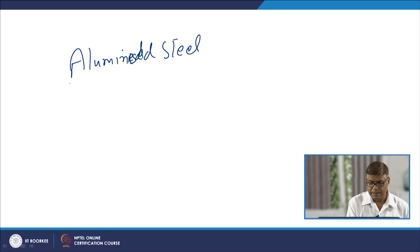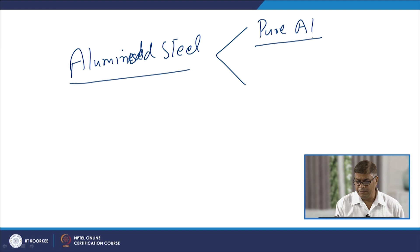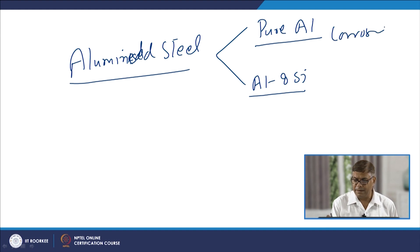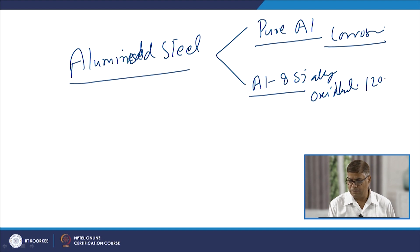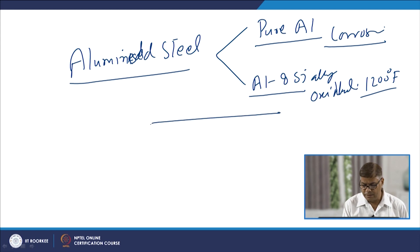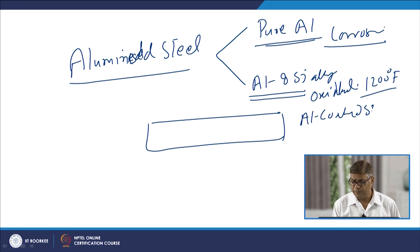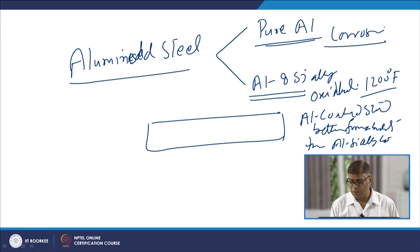Aluminized steels can be coated using pure aluminium or aluminium-8% silicon alloy using the hot dipping method. Pure aluminium primarily helps in improving corrosion resistance, while aluminium-8% silicon alloy coating helps to increase oxidation resistance at high temperatures around 1200°F, improving high-temperature oxidation resistance. Comparing weld joints of steel sheets coated with pure aluminium versus aluminium-silicon alloy, the aluminium-coated steels show better formability than the aluminium-silicon alloy coated steels.